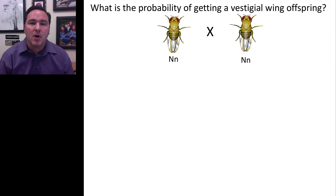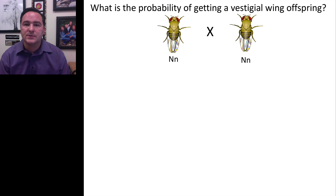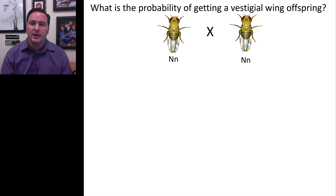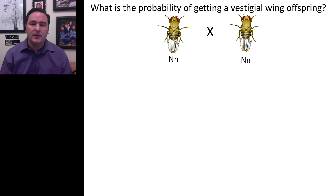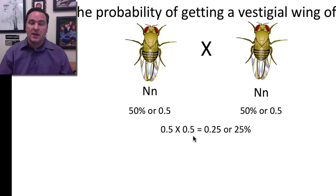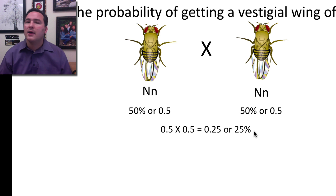We can also apply probability to genetics crosses. What is the probability of getting a vestigial wing offspring from two given parent genotypes? You need a little n, little n offspring. So what's the probability of getting a little n from one parent? That's 50%. And from the other parent? That's also 50%. Since both must occur, it's 0.5 times 0.5, which is 0.25 — a 25% chance. This is one way of solving genetics problems.